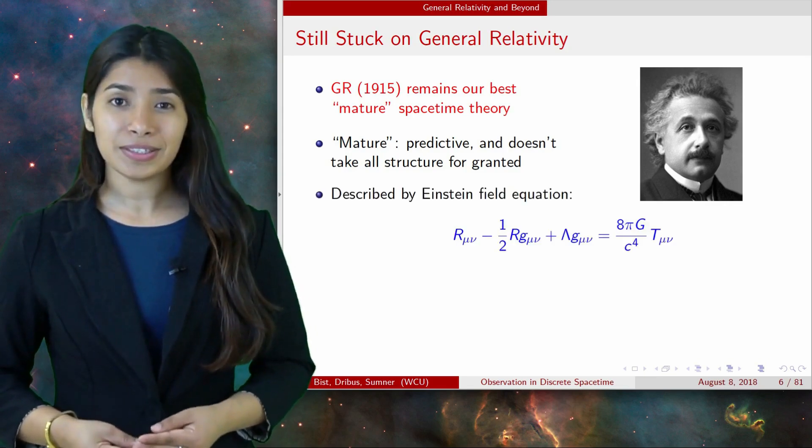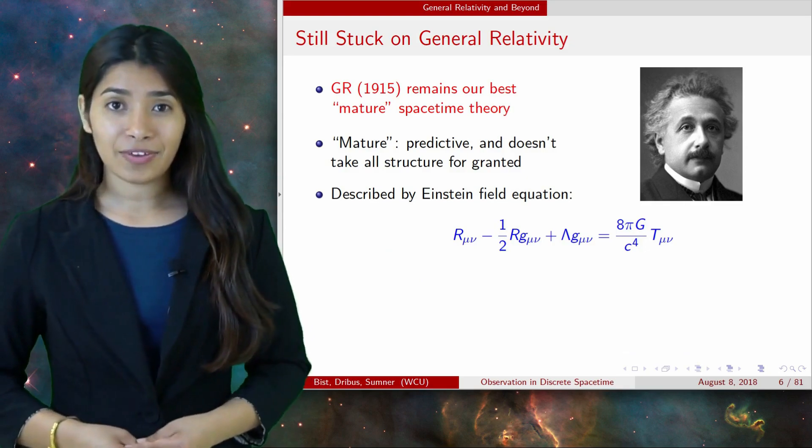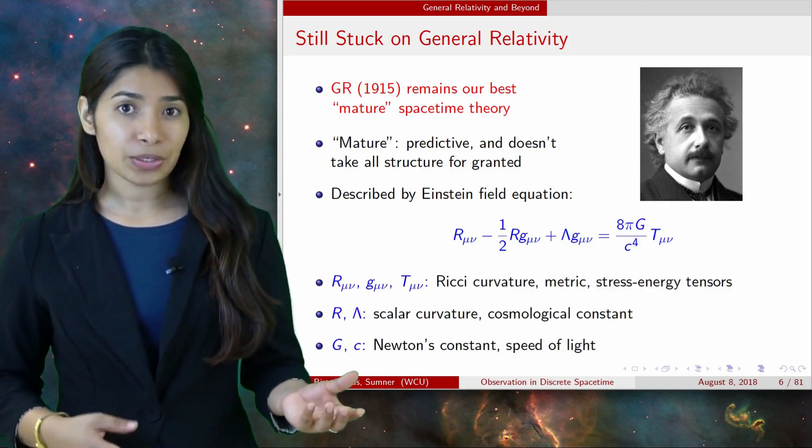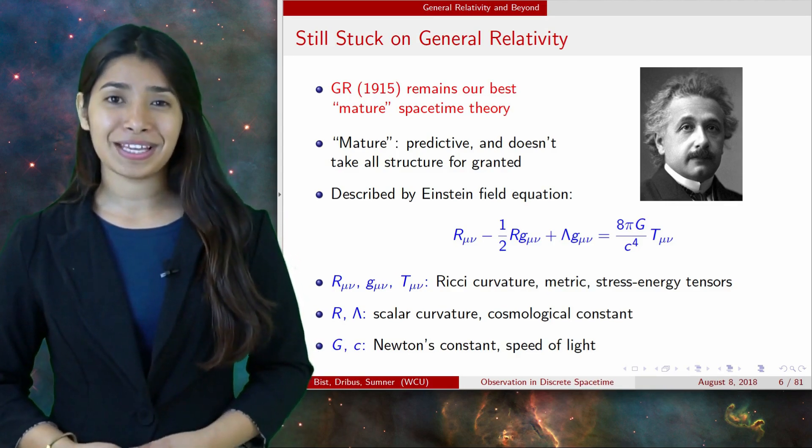It is represented by Einstein's field equation, which we have reproduced right here. Below, we have identified the tensors and scalars. Basically, the left-hand side represents geometry and the right-hand side represents matter and energy. Einstein actually liked the left-hand side better.